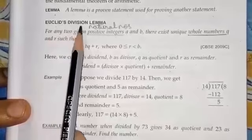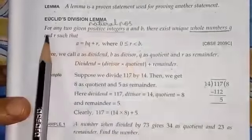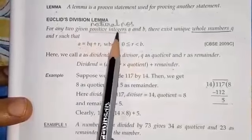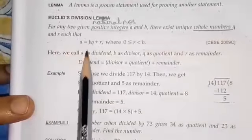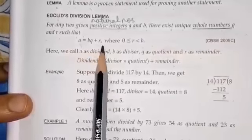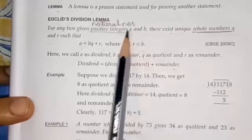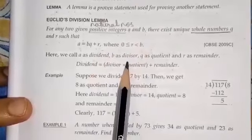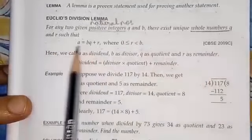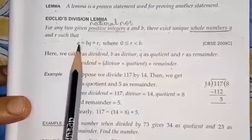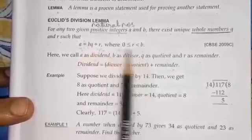State Euclid's Division Lemma. The statement goes like this: for any two given positive integers a and b, there exist unique whole numbers q and r such that a = bq + r, where 0 ≤ r < b. Here, a is the dividend, b is the divisor, q is the quotient, and r is the remainder. This is exactly the division algorithm: dividend = divisor × quotient + remainder. Here we also see the range of the remainder.